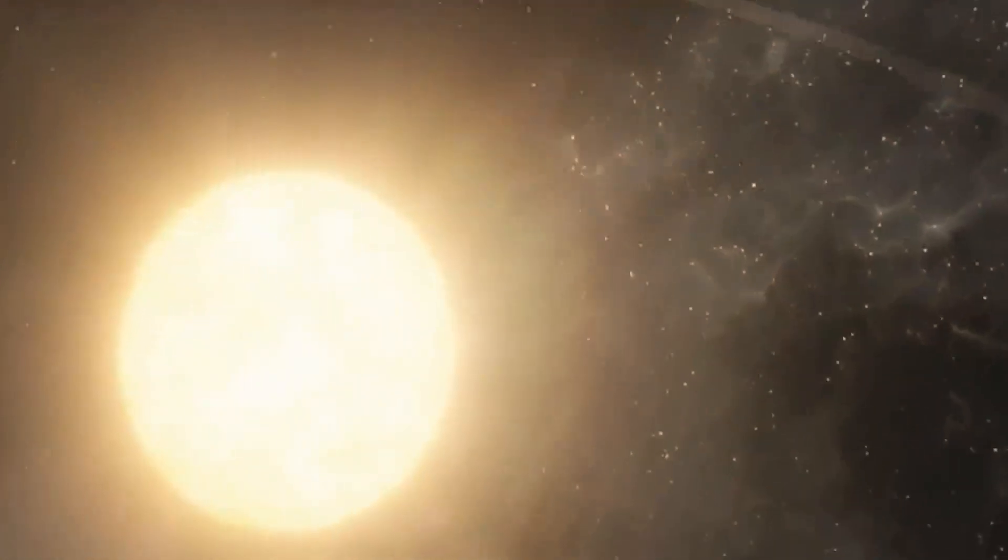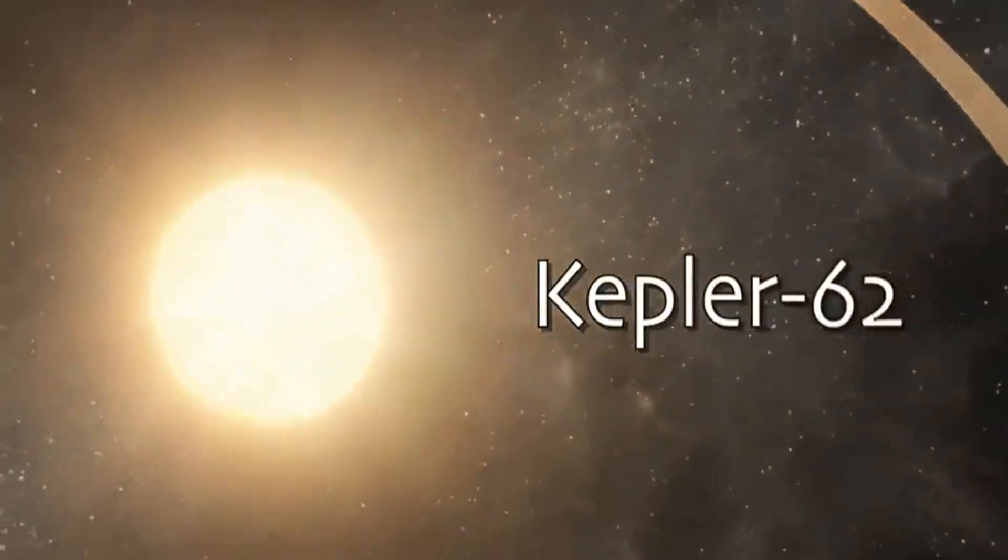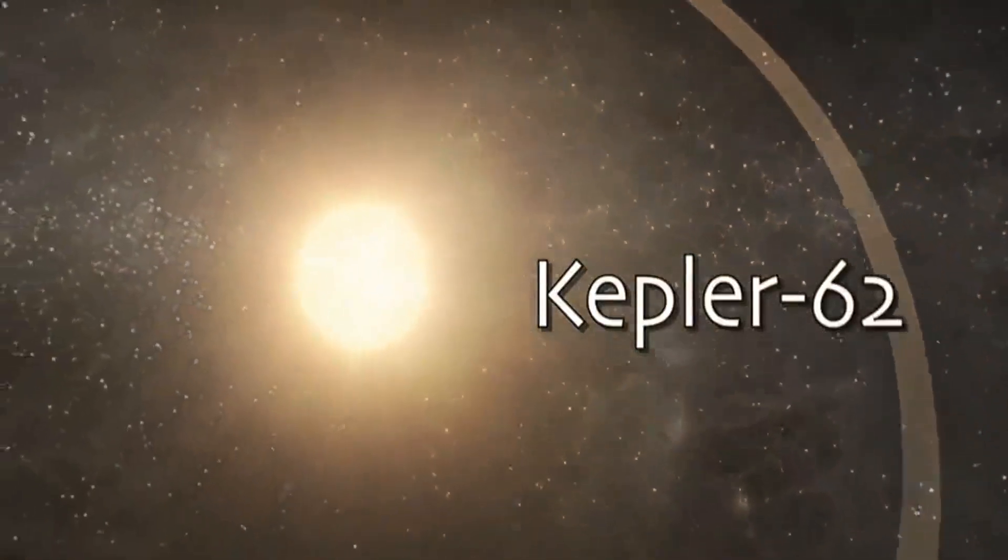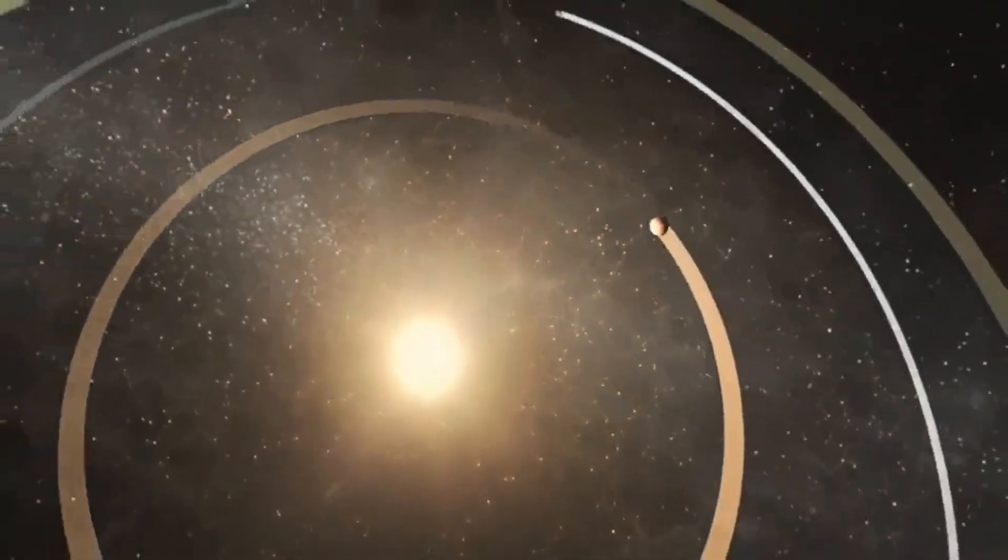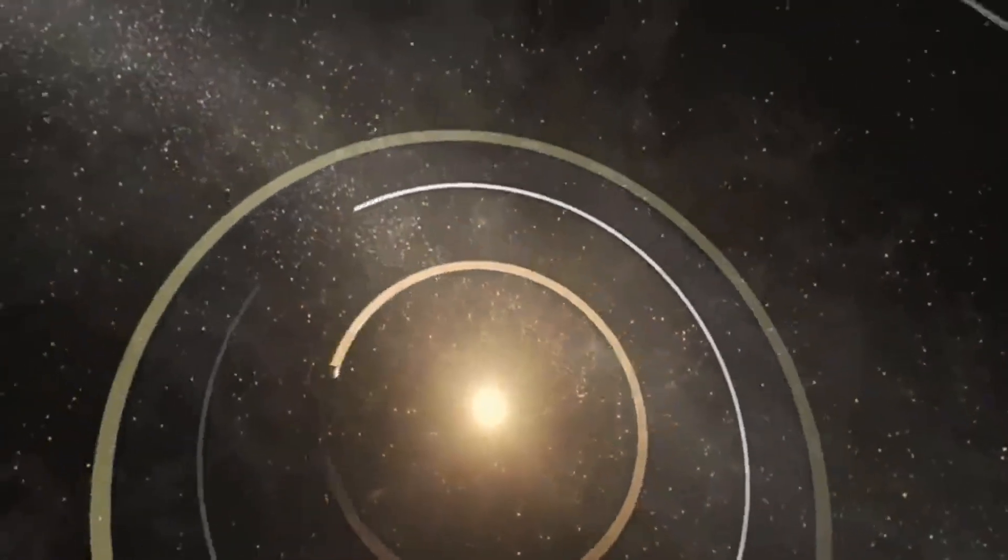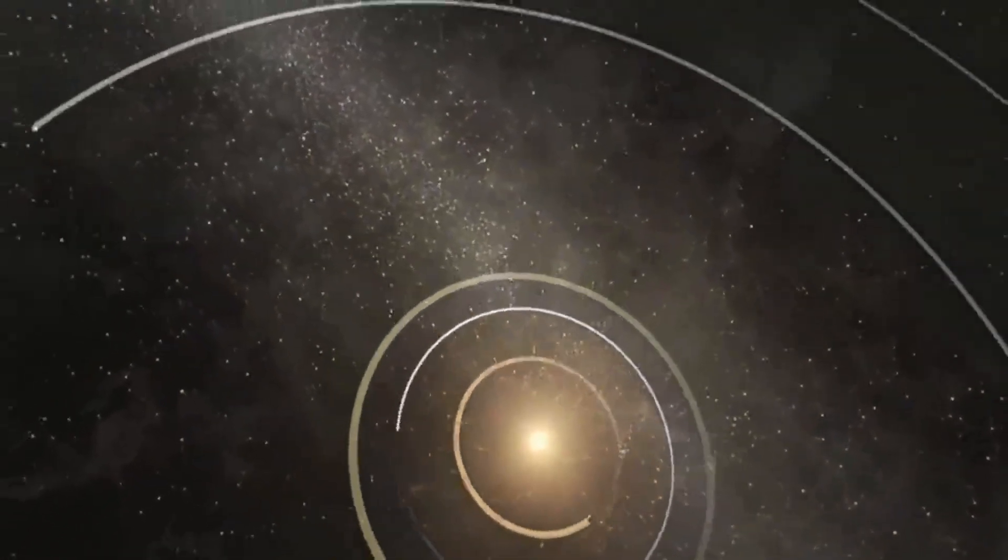The star, Kepler-62, about 1200 light-years away in the constellation Lyra, is like our Sun, but smaller and cooler. So the habitable orbits, where water can be liquid, are closer in.